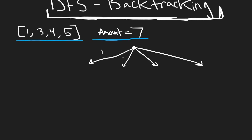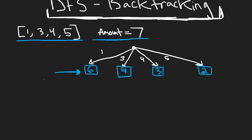We can choose a one, a three, a four, or a five. If we choose one, the remaining amount is six (seven minus one). If we choose three, the remaining is four. If we choose four, the remaining is three. If we choose five, the remaining is two. Since none of these are zero, we have to continue doing the brute force approach.